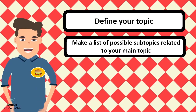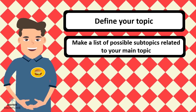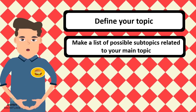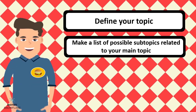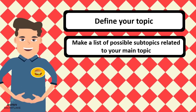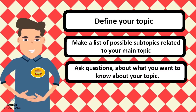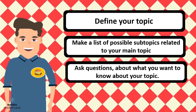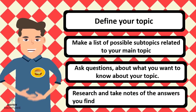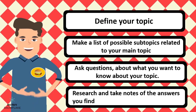For example, if my essay topic is hamburgers, some subtopics could be the first hamburger ever made, or ingredients of hamburgers, or hamburgers in different cultures. Asking questions about what you want to know will help you define your subtopics. And finally, researching or looking for the answers to your questions. Make sure you take notes about everything so you don't forget.